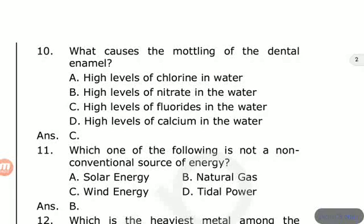Ant, bees, and insects contain formic acid. Apple contains malic acid. Soil contains humic acid. Palm oil contains palmitic acid.